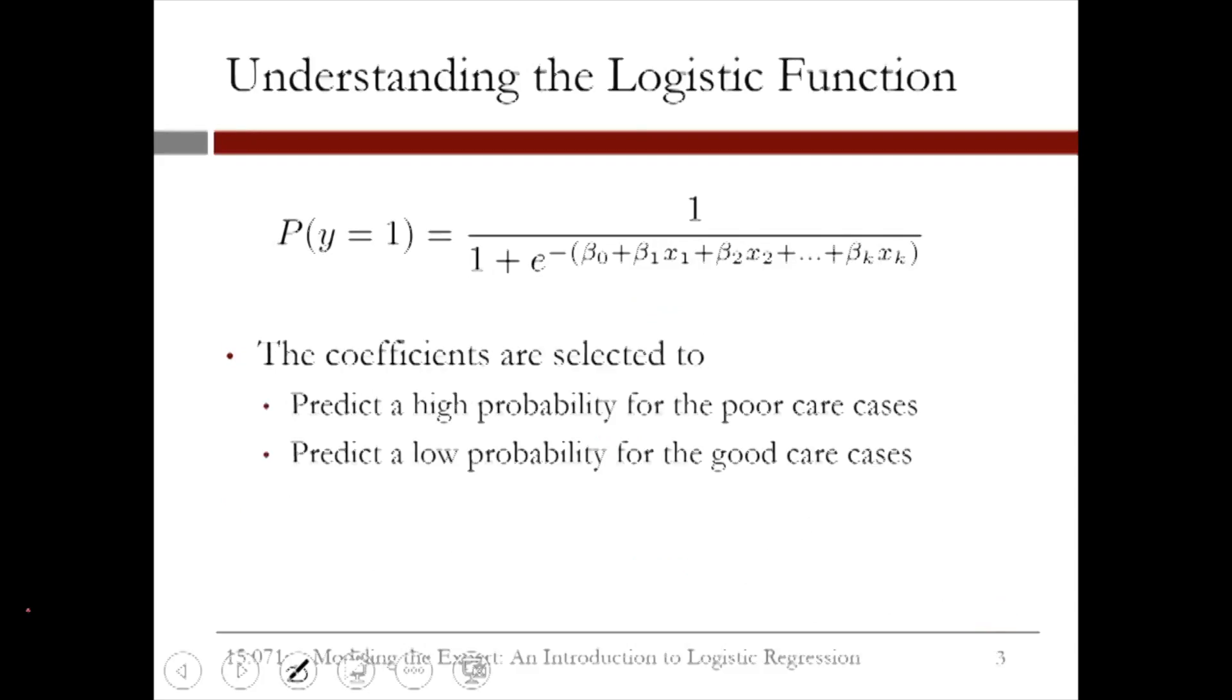The coefficients, or betas, are selected to predict a high probability for the actual poor care cases and to predict a low probability for the actual good care cases.